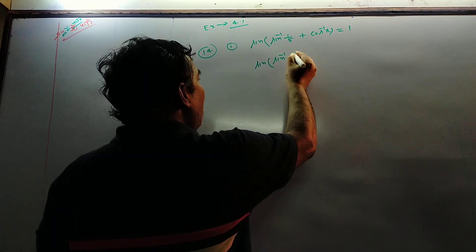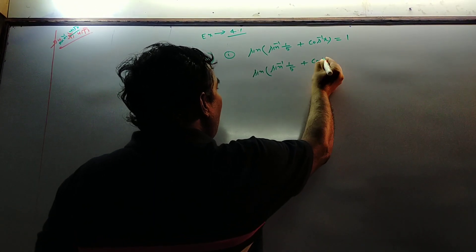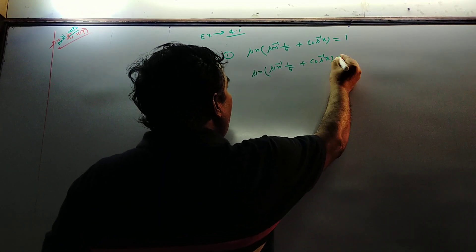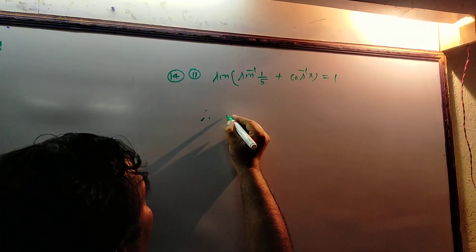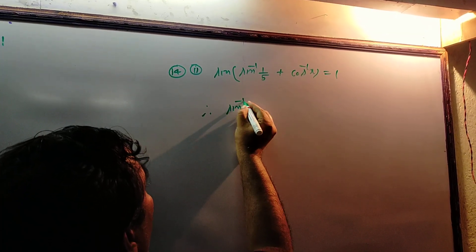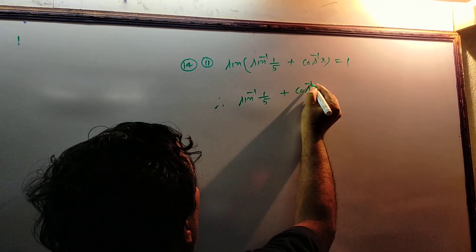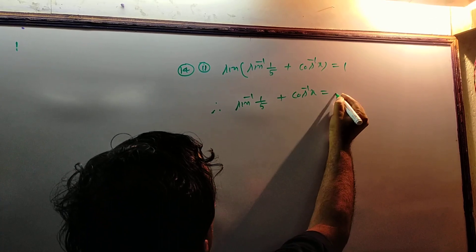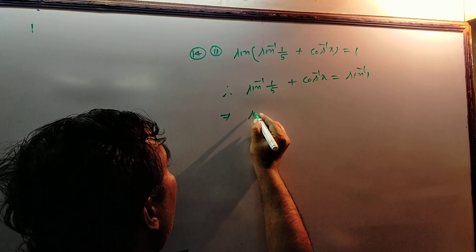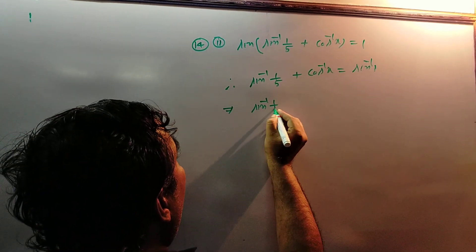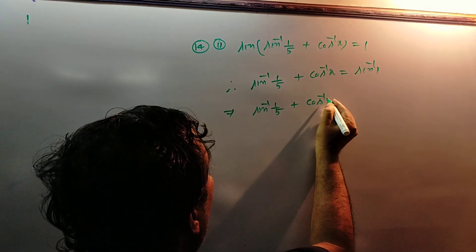sin⁻¹(1/5) + cos⁻¹(x) = 1. The equation is sin⁻¹(1/5) + cos⁻¹(x) equal to sin⁻¹(1).